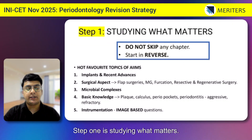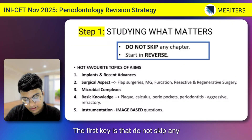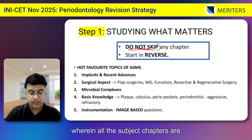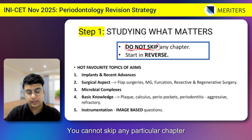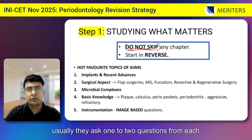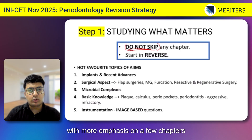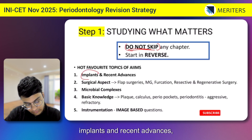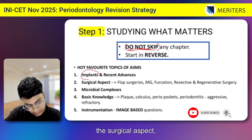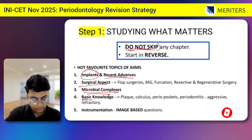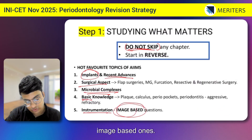Step one is: study what matters. Do not skip any chapter because perio is one such subject where all chapters are important. You cannot skip any particular chapter because there are around 16 to 17 chapters, and usually they ask one to two questions from each, with more emphasis on a few chapters such as implants and recent advances, the surgical aspect, microbial complexes, basic questions, instrumentation, and image-based ones.